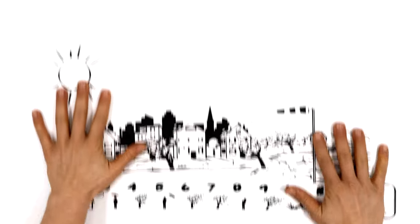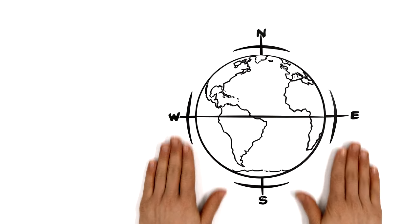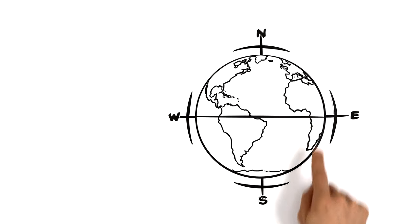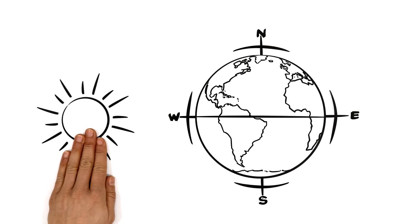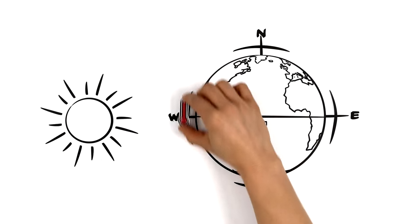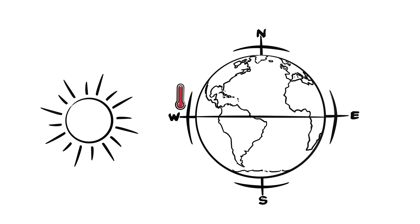We can also look at this on a global scale. On the equator, the biggest circle of latitude around the Earth, the sun shines the strongest. So it's very hot here, with many warm and humid low pressure zones.